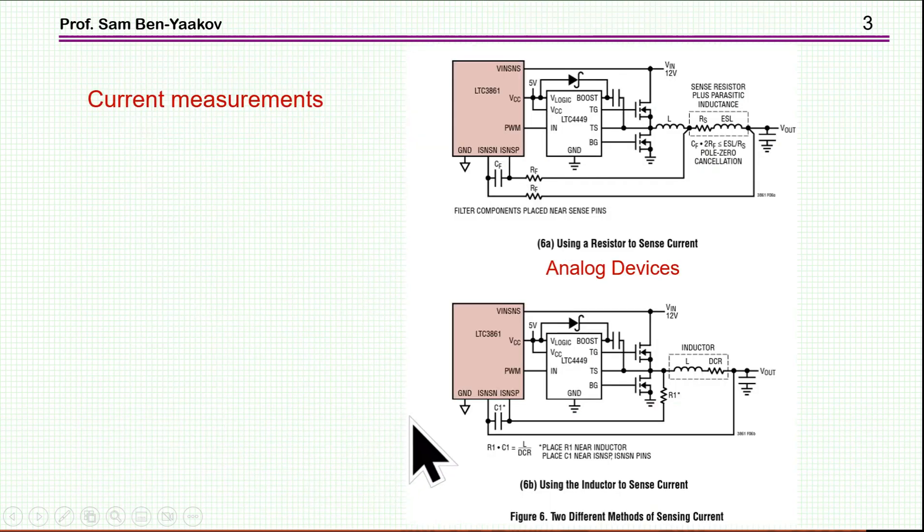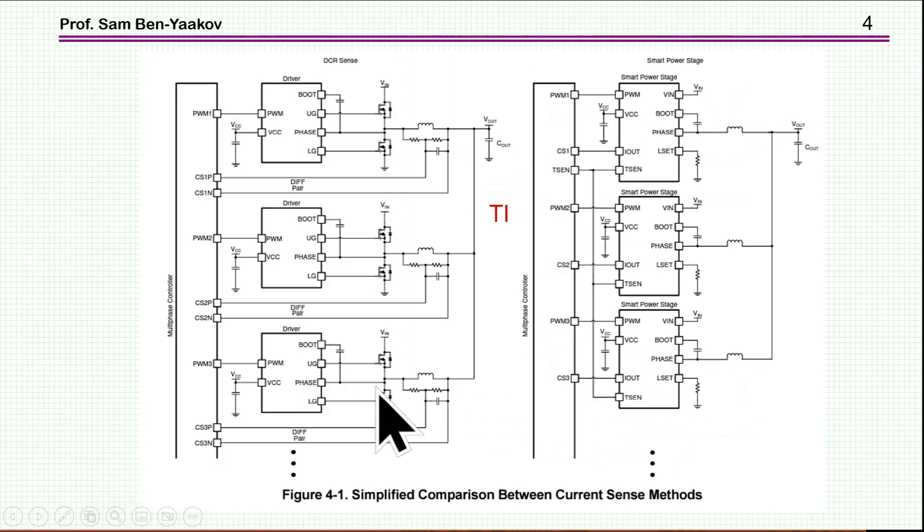And to do that, you need to measure the current. This can be done by either looking at a sense resistor, unfortunately for high power there is some power loss associated. There is a more clever way in which you use the resistance of the inductor as a sensor. By having an RC network here, you get across the capacitor a replica of the current of the inductor. This is very nice.